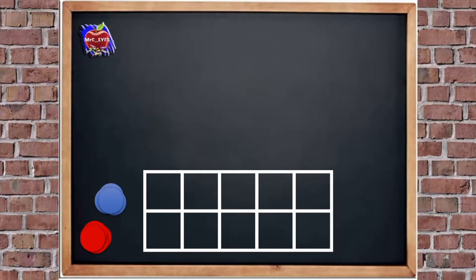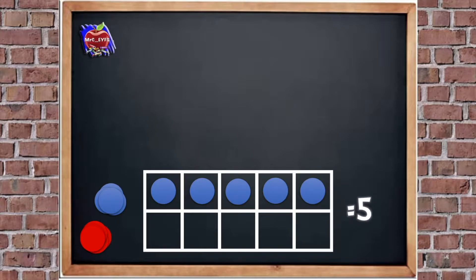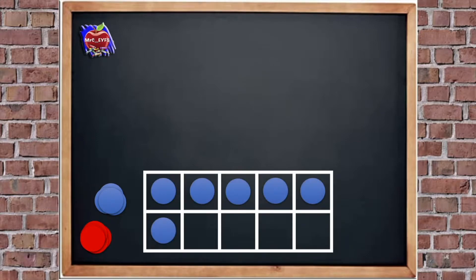We're going to have a little practice now. So how many counters are there now? Let's check: there's one, two, three, four, five. So we know that when half of our tens frame is full, it equals five. And today when we're counting, we're going to be counting on from five - we've practiced this before. So how many counters do we have now? We're counting on from five: there are five, six. So we've got six counters.